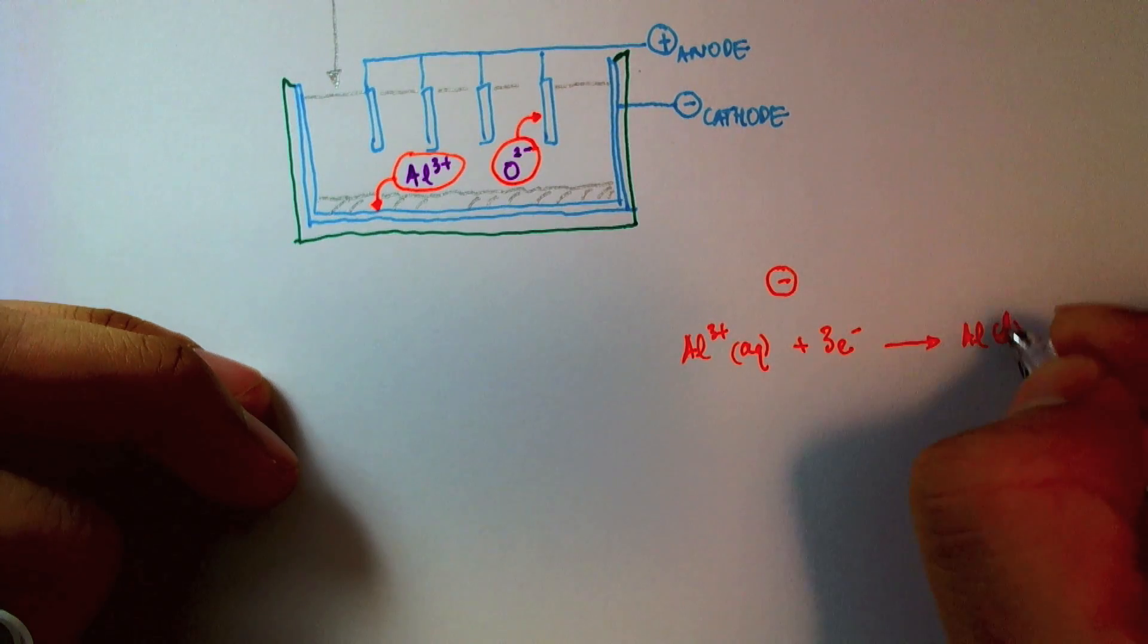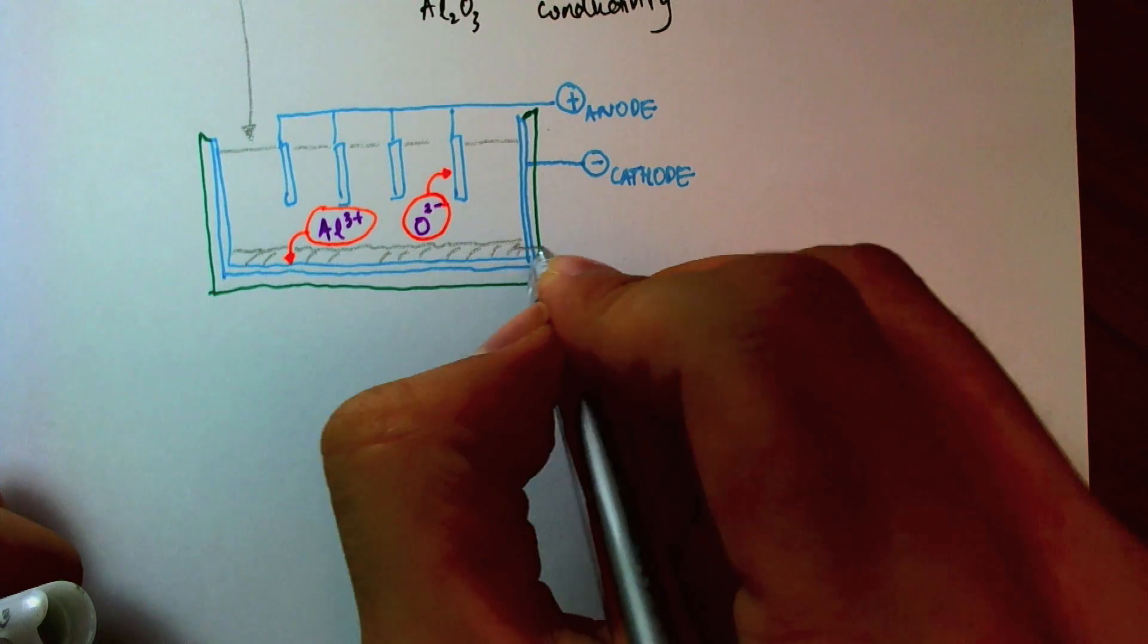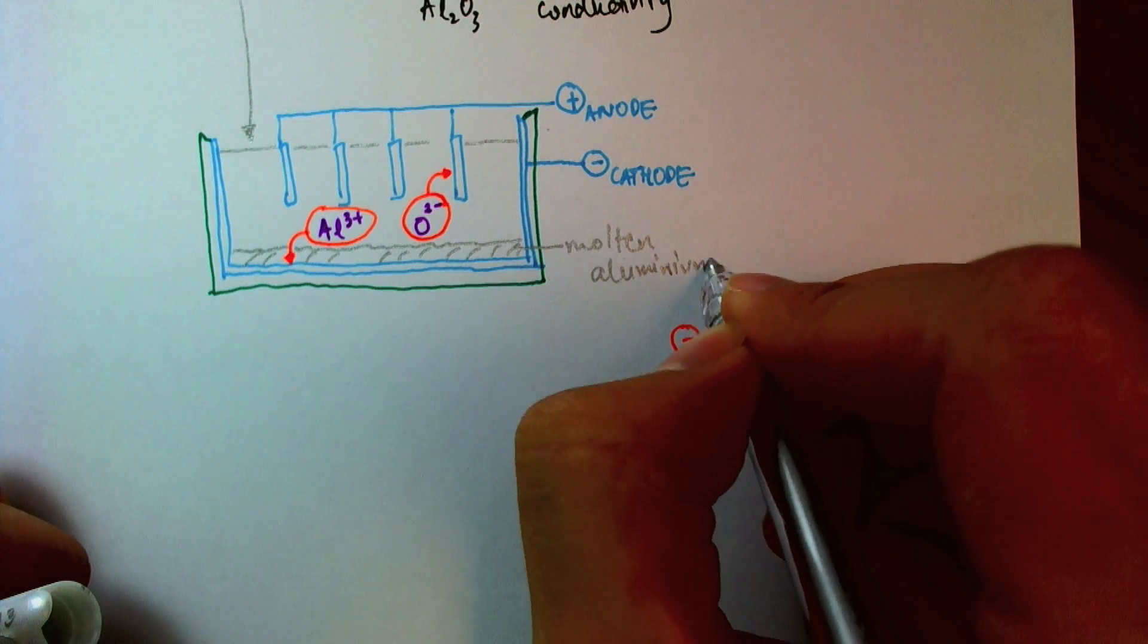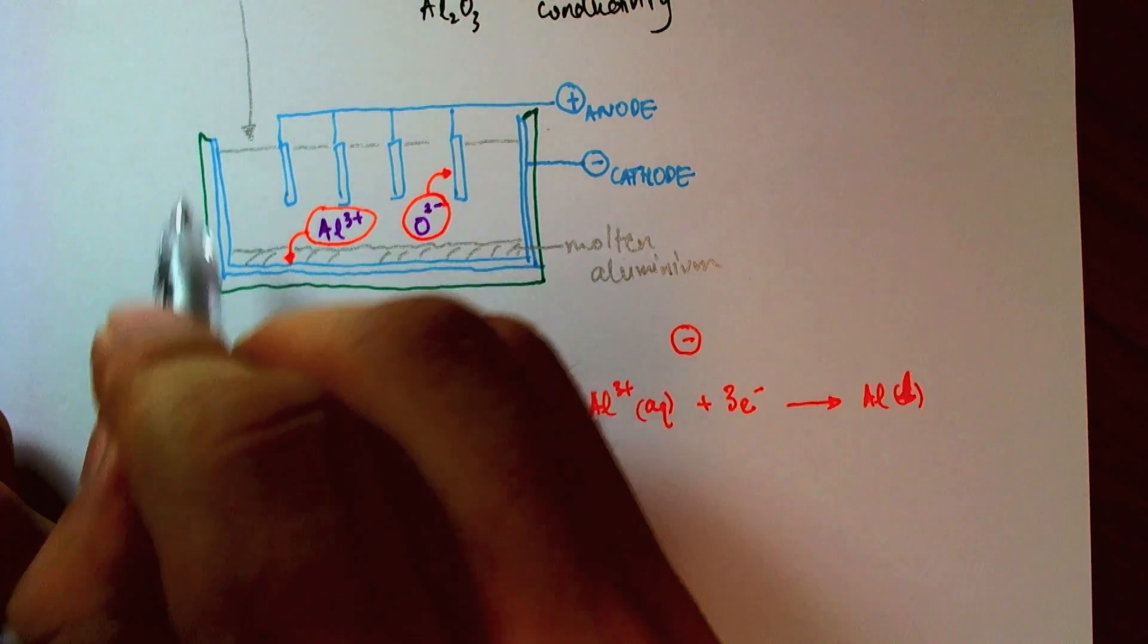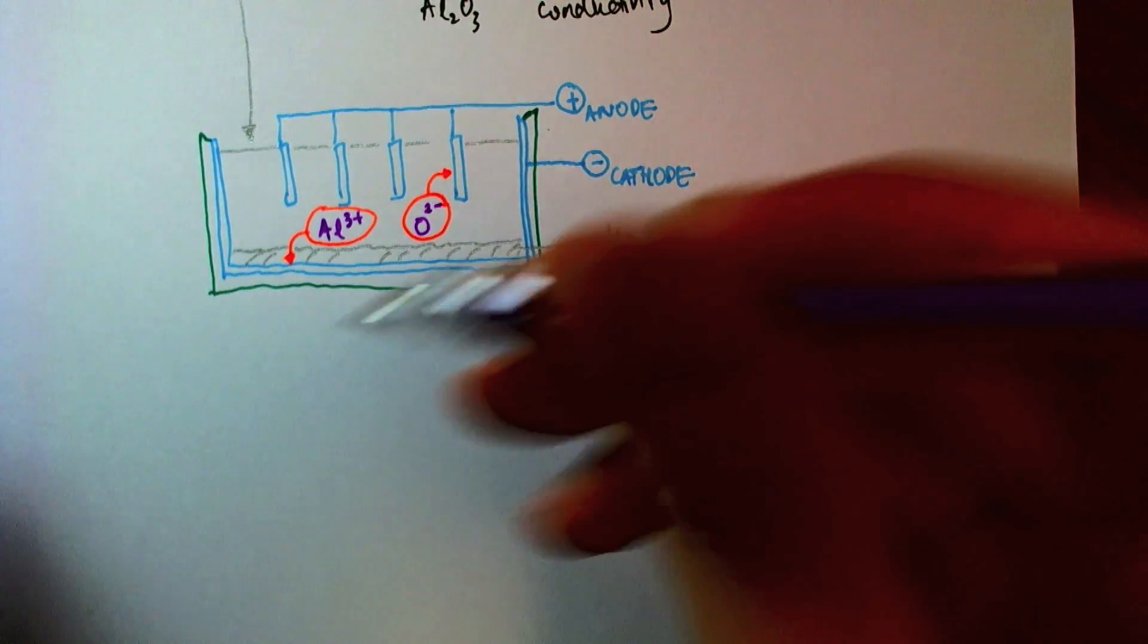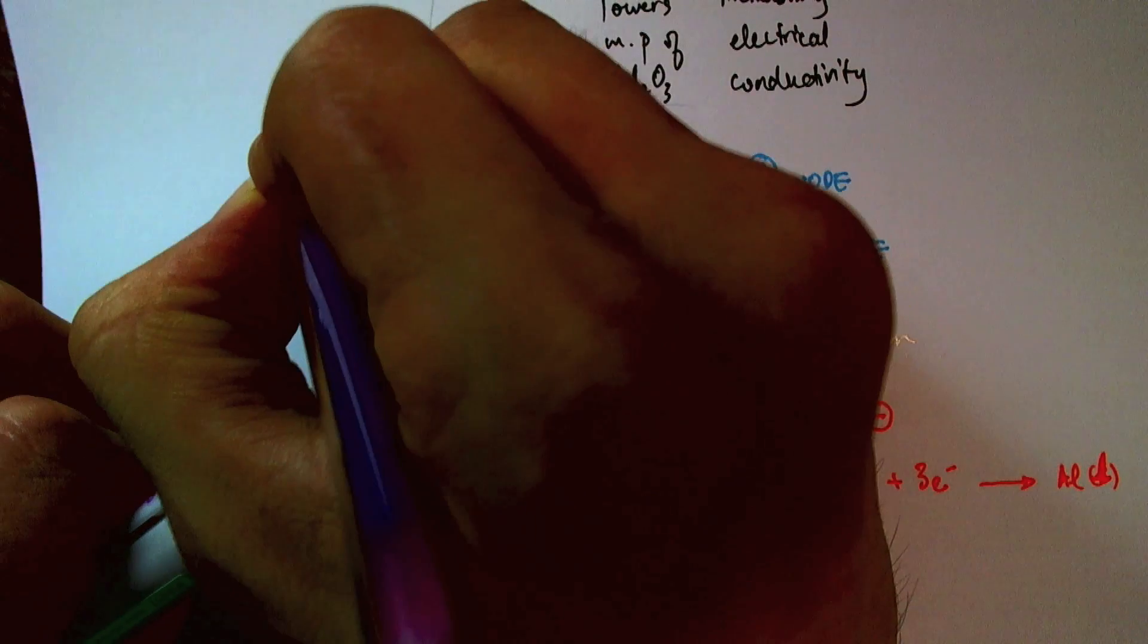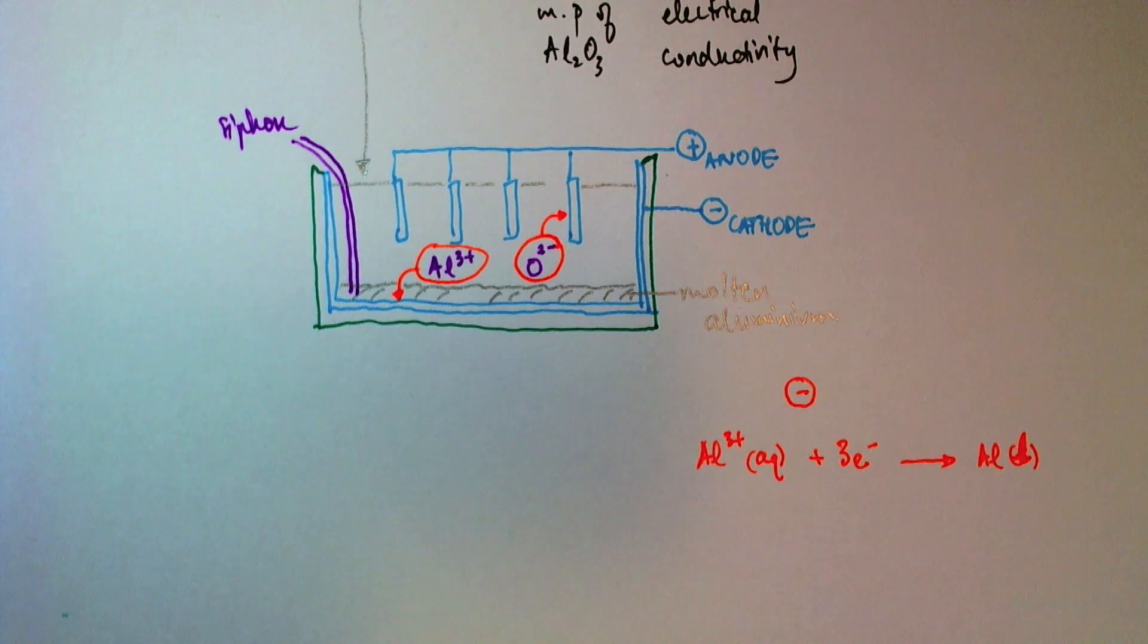So aluminum is actually in its liquid state. So I have molten aluminum sunk to the bottom of the tank. And now we see why we put the cathode at the bottom, because the aluminum is more dense, so it sinks to the bottom. And then to get the aluminum out, we have a siphon here to suck up the aluminum and use it for all our applications.